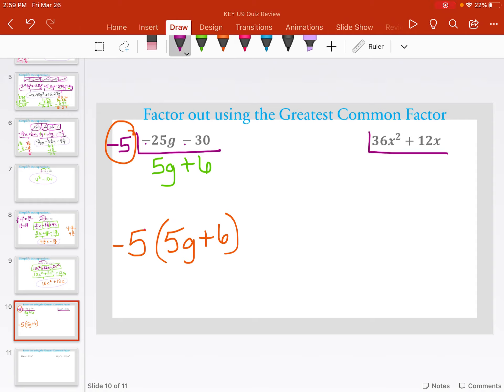Okay, over here, 36 and 12, start with your numbers. They're both divisible by 12. So 36 divided by 12 gives me 3x squared. 12 divided by 12 gives me 1x.